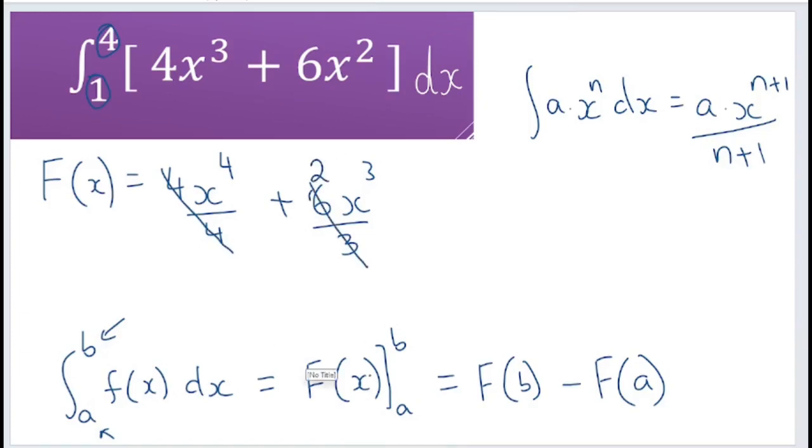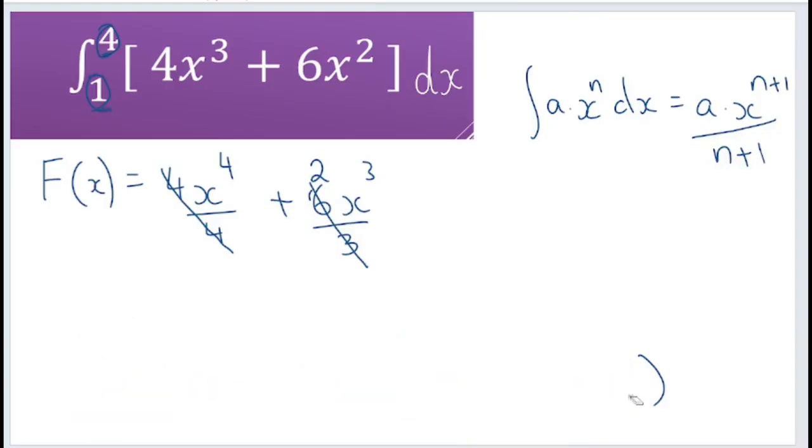Now the next thing we want to do is find x to the power of 4 plus 2x to the power of 3, and we want to find that between 4 and 1 because that's what our limits are.